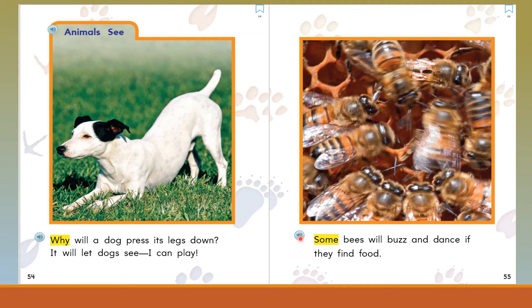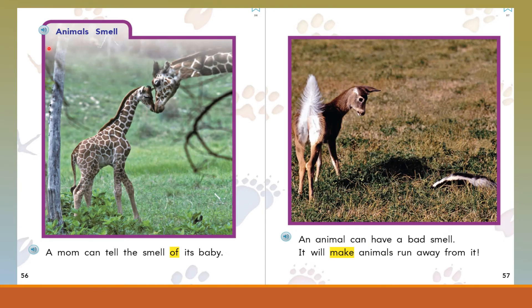Some bees buzz and dance if they find food. Animals smell. A mom can tell the smell of its baby. Do you see the giraffe smelling her baby? An animal can also have a bad smell to make other animals run away. There's a skunk and there's a deer — and I would hope the deer is going to run away from the skunk, or the deer is going to end up smelling pretty bad.